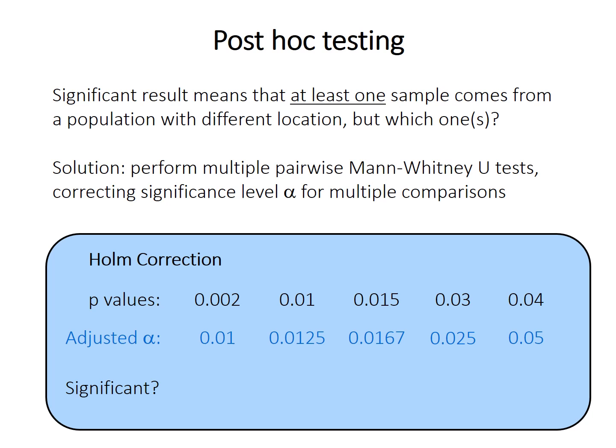The second and third are also statistically significant. But the fourth is not, because its p-value is greater than our adjusted significance level. At that point we stop — we don't even look at the fifth one, even if subsequent values might be below the adjusted threshold.